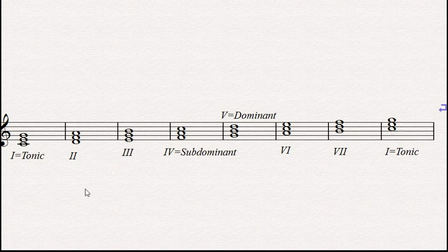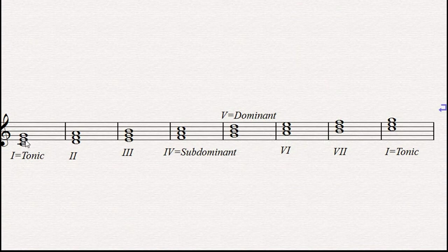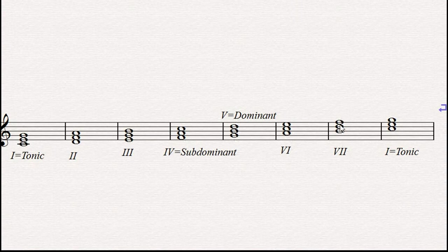In a major scale, the triads that we form will always follow these modes: major for the first, minor for the second, minor for the third, major for the fourth, major for the fifth, minor for the sixth, and a diminished mode for the seventh. This is working on the C major scale.